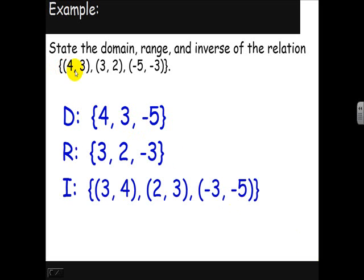So instead of (4,3) we get (3,4). Instead of (3,2) we get (2,3), and finally instead of (-5,-3), we get (-3,-5). So there's our first inverse.